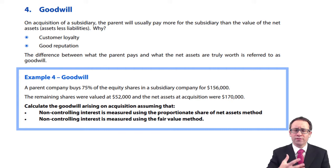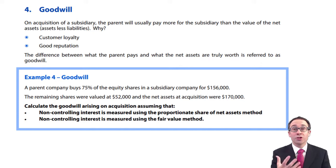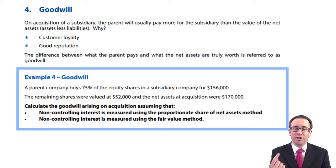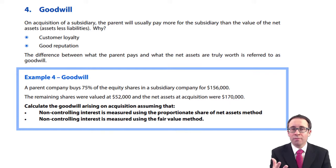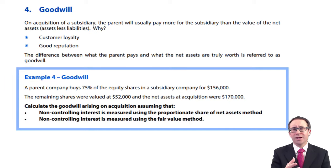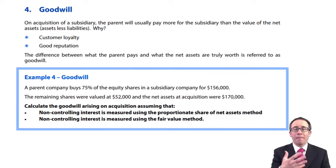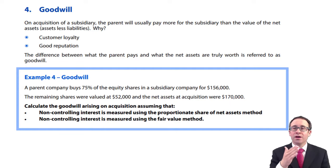The extra paid above the value of the assets and liabilities is because there is an unrecognized asset within the subsidiary's financial statements. A subsidiary has probably been trading for several years and has a good reputation with its customers — there's customer loyalty and repeat business every year. That's a benefit within the business, but you can't recognize it in the individual company accounts of the subsidiary, because going back to the definitions of intangibles and assets, you don't control that customer loyalty — so it cannot be recognized. How would you even measure it? It's very difficult.